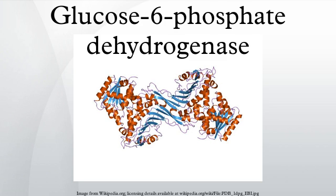G6-PD is widely distributed in many species, from bacteria to humans. In higher plants, several isoforms of G6-PDH have been reported, which are localized in the cytosol, the plastidic stroma, and peroxisomes. Among humans, G6-PD is common in certain insular groups, such as Parsis.